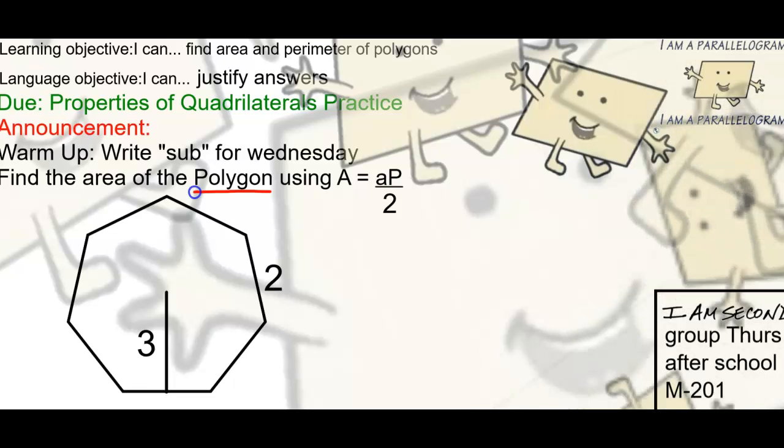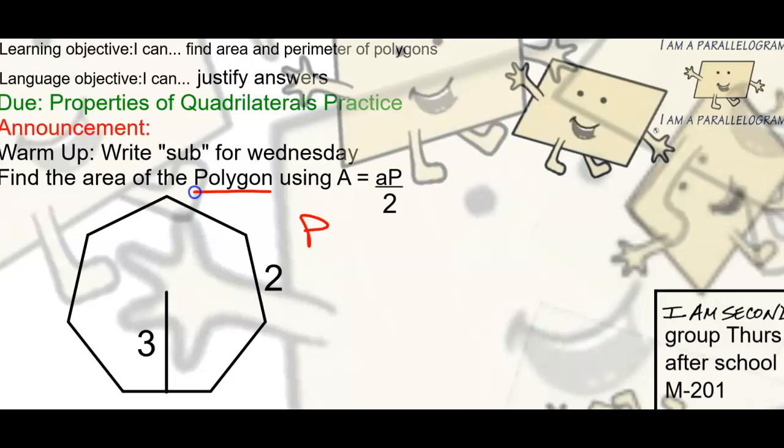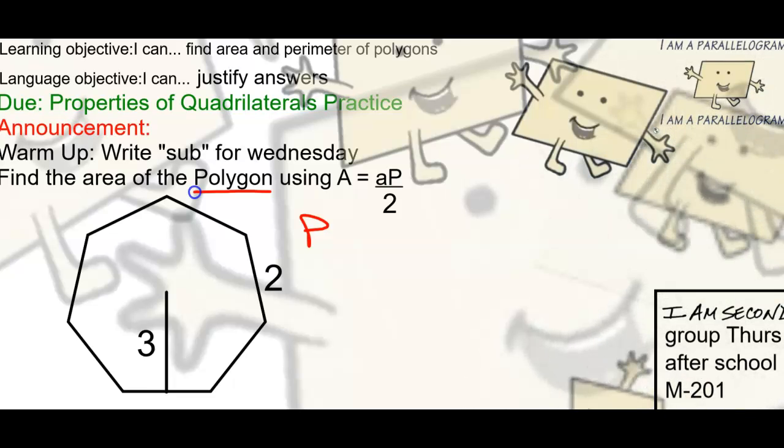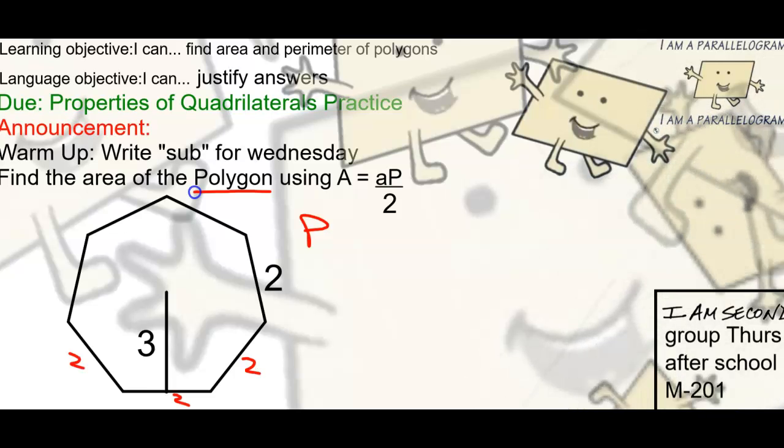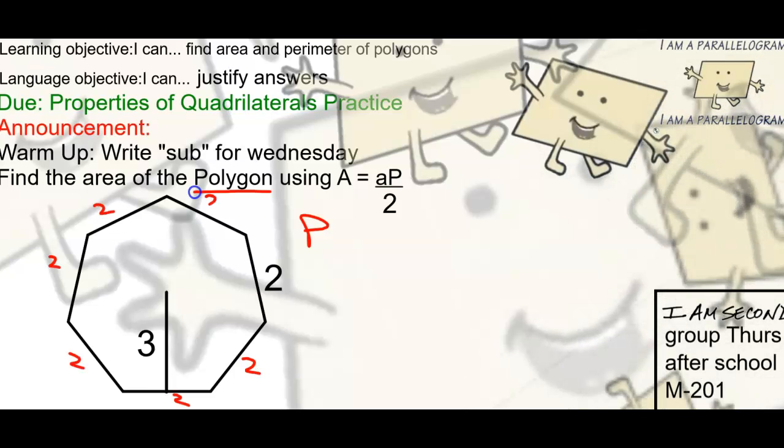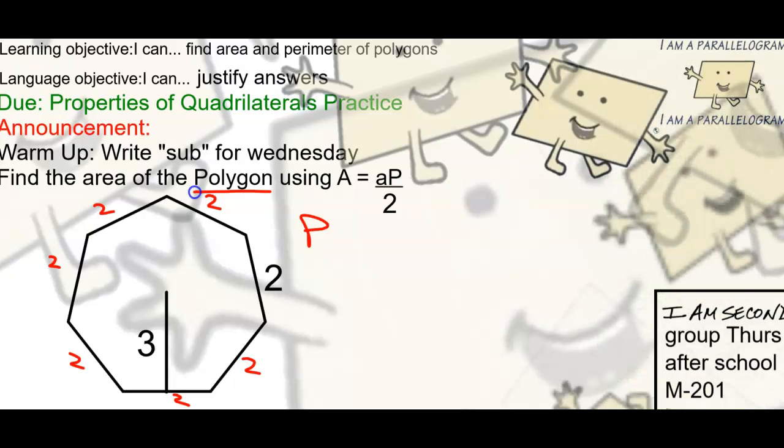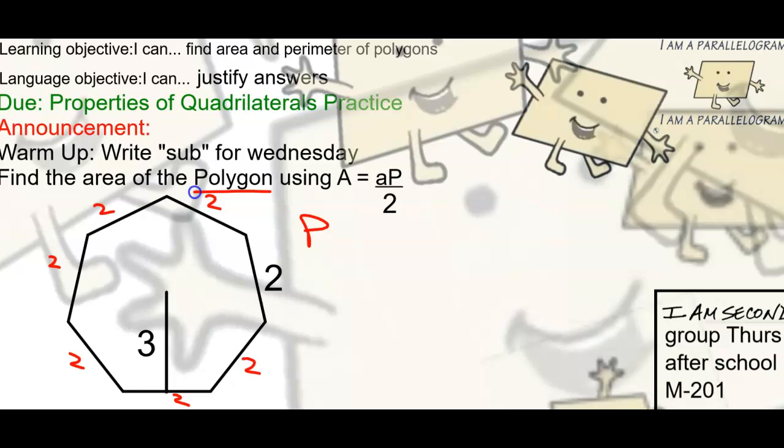First let's find the perimeter. That's the easy thing. If it's regular, all the sides are the same. If this side is two, they're all two. You don't have to label them all. How many sides are there? Seven. So if there's seven sides and they're all two, what do I do?